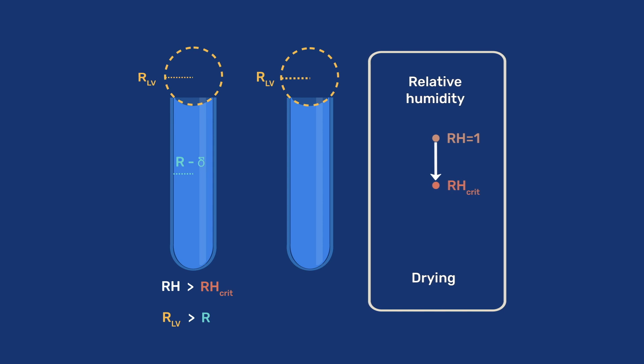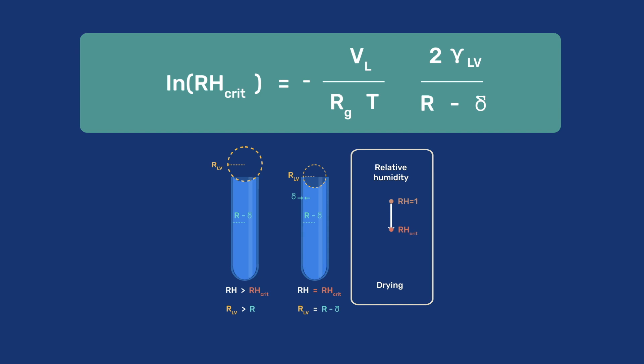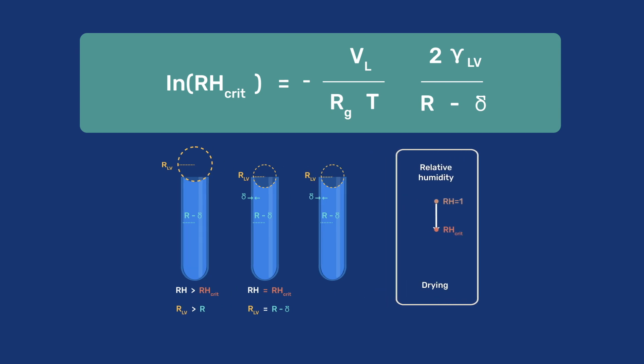The meniscus can enter the tube once the relative humidity drops to the critical value of RH crit, given by natural log of RH crit equals minus VL over RT times 2 gamma LV over R minus delta, where delta is the thickness of the adsorbed film of water on the surface of the tube. Any attempt to decrease the local relative humidity below RH crit will be countered by evaporation of condensed water.